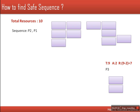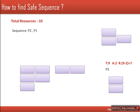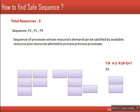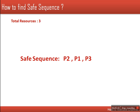The requirement of P3 can be satisfied, so out of 10, 7 will be allotted to P3. Process P3 will complete its execution and release all 9 of its resources. This sequence — P2, P1, P3 — is used to find out whether the system is in a deadlocked state or not. This is the way to find a safe sequence when we have a single type of resource. For multiple types of resources, we can use the same algorithm with different resource types, which we will see in the next video. Thank you very much for watching.